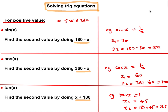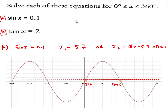For example, solve sin x = 0.1. Stick it in the calculator — first value is 5.7° (to one decimal place). The second answer using the rule is 180 - 5.7 = 174.3°. If you want to see what's happening graphically: the line y = 0.1 intersects the sine graph at 5.7°, and by symmetry the distance on each side is equal, giving 174.3° as the second answer.